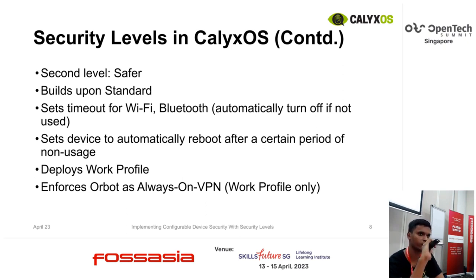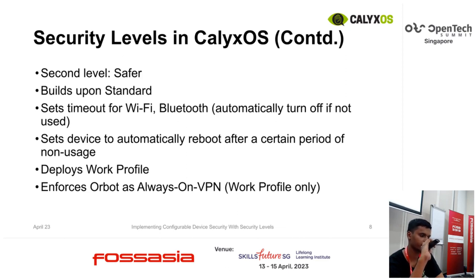The Safer mode also deploys a work profile. Work profiles are essentially encapsulated profiles in which you can install applications you wish to limit access to the system. Applications installed in this work profile will not have access to your data — things like your gallery images, your other applications, and their data. The Safer mode also enforces Orbot as the always-on VPN in the work profile, which means that all network communication made within that work profile goes over the Tor network or a VPN, and is encrypted. No one knows what you are doing other than yourself.